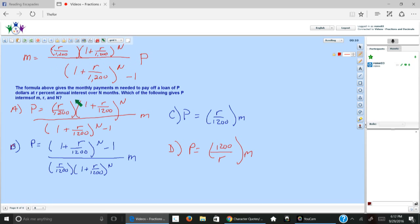Then we read the question: The above formula gives the monthly payment m needed to pay off a loan of p dollars at r percent interest rate over n months. Which of the following gives p in terms of m, r, and n? What does that mean? Well, this is where they're trying to test something very simple but they're making it difficult. They're trying to test something that you learned in seventh or eighth grade.